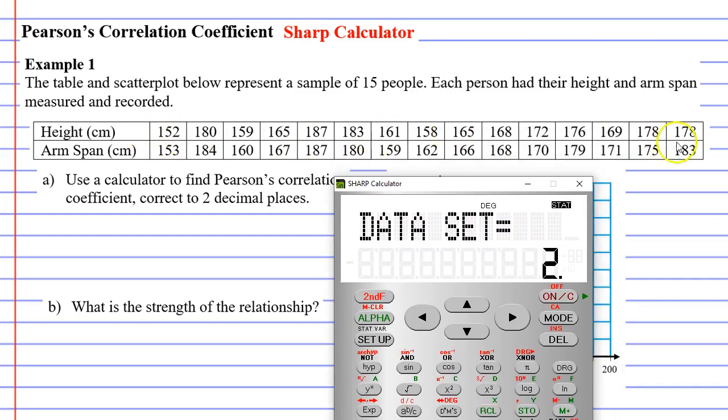When we look at our table of values here you will notice that we have 15 sets of data values. If you do this correctly it should say on your calculator data set equals 15. I'm going to pause, enter in all the values. I want you to do the same and we should all have a calculator that says 15 here.